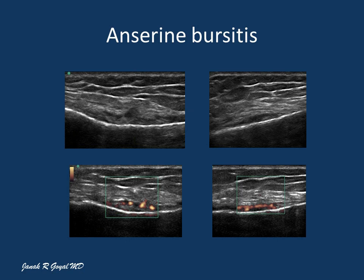Here is a patient with anserine bursitis. This patient with SLE presented with acute onset of pain, was treated with naproxen 500 mg twice a day, did not respond, and returned in a week asking for help. Sonographic examination showed heterogeneous widening of the anserine bursa with a power Doppler signal, and the patient responded very well to a local glucocorticoid injection.